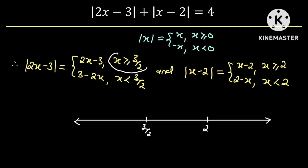Now if x is greater than 3/2, the absolute value of 2x minus 3 will just be equal to 2x minus 3. And if x is less than 3/2, then the absolute value of 2x minus 3 is equal to 3 minus 2x.